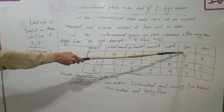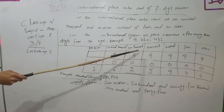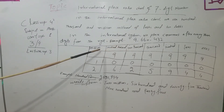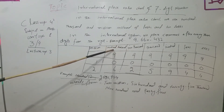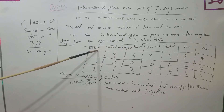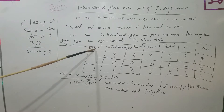The place value chart includes: ones, tens, hundreds, thousands, ten thousands, hundred thousands, and million. For the Pakistani place value system we have ones, tens, hundreds, thousands, ten thousands, then lakhs and 10 lakhs. For the International system we have ones, tens, hundreds, thousands, ten thousands, hundred thousands, and million.